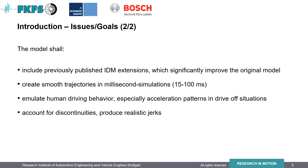I'd like to recap the main points of the previous slide: why did we need an improved car following model? First, many extensions of the original IDM already exist but are not implemented in SUMO yet. SUMO is also often used for large map simulations where millisecond simulation is not feasible as it would slow down the simulation significantly. So altogether our goal was to create a model which includes existing IDM extensions, creates smooth trajectories, emulates human driving behavior, and produces jerk values which don't exceed measured ones.